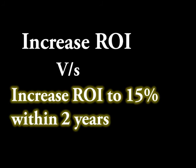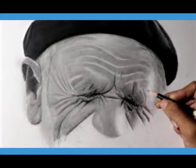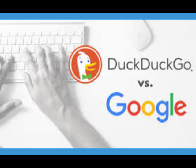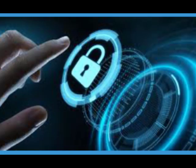Second, objectives should be quantitative whenever possible. For example, 'increase return on investment' is vague, whereas 'increase ROI to 15% within two years' is better. Third, goals should be realistic — arising from analysis of the business unit's opportunity and strength, not from wishful thinking. Just like DuckDuckGo cannot compete with Google in terms of search volume, but can compete on privacy.